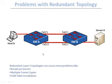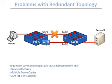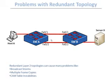A redundant topology is basically a topology that eliminates a single point of failure. If one of the links of communication fails for some reason, you will always have a backup link of communication, so you will not disrupt normal communication during work hours in your company.